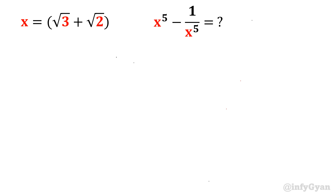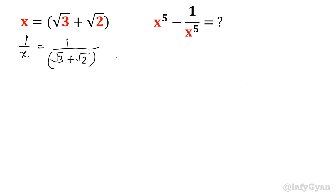So as you can see, x power 5 minus 1 over x power 5 — we will try to find out the value of 1 over x. So it will be 1 over root 3 plus root 2. Let us multiply by its conjugate in the numerator and denominator.